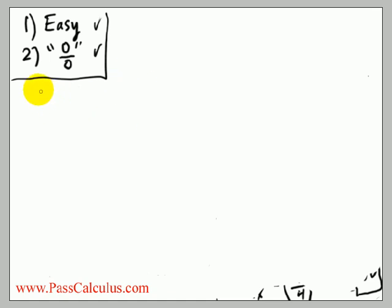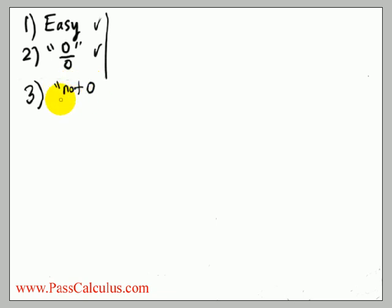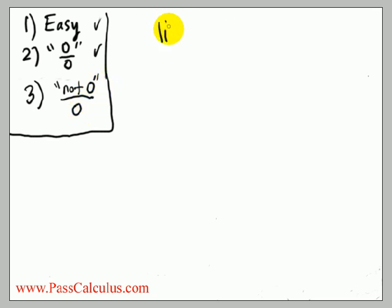Let's tackle the third kind of limit now, and this one is kind of tricky. The third kind of limit looks like this: not zero over zero. So when you put the number in at the beginning, it's a non-zero number over zero. Let's do a little example.